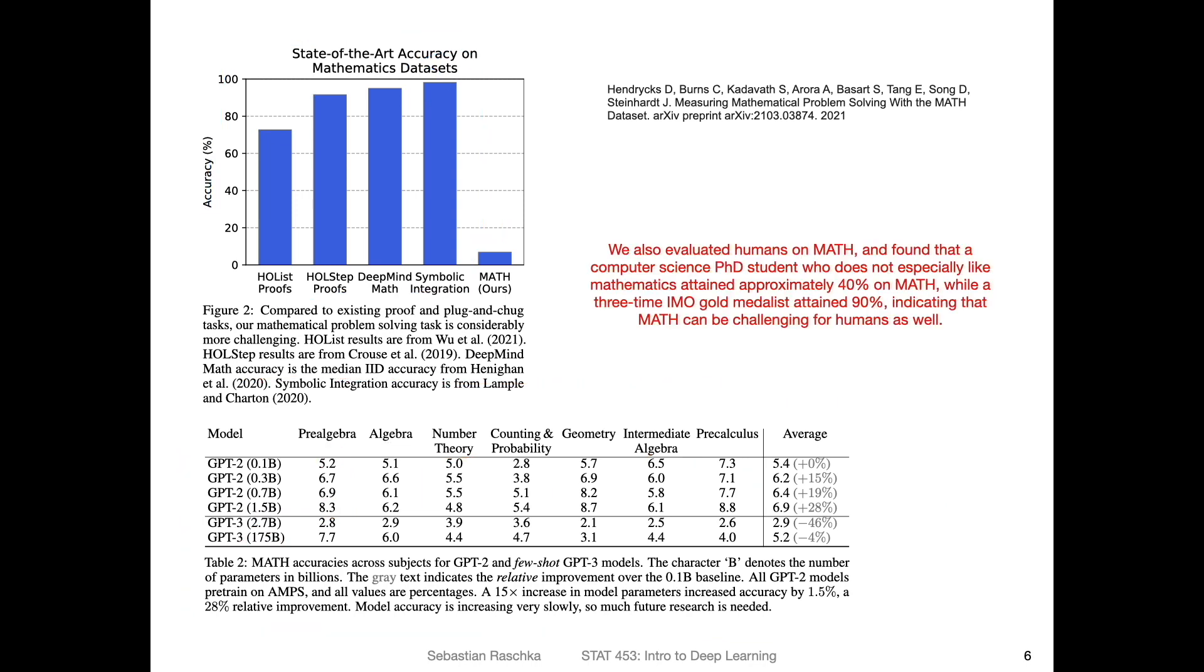One more thing. They also evaluated the human performance, just as a reference. So they asked a computer science PhD student who also doesn't especially like mathematics, and the student got 40% accuracy, so much better than these models. And a gold medalist would, for instance, get 90% accuracy, just to have a reference that this is a dataset, even by a person who is maybe not a fan of math, like me, could get approximately 40%. Whereas these models are all around like eight, six, 5% and so forth.